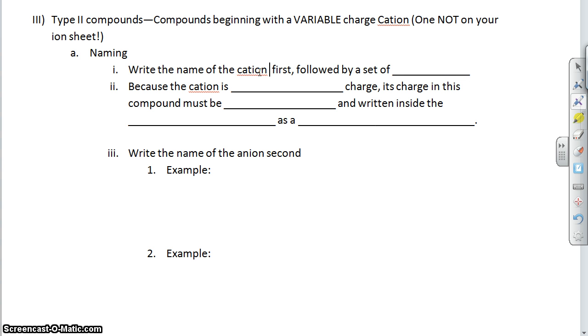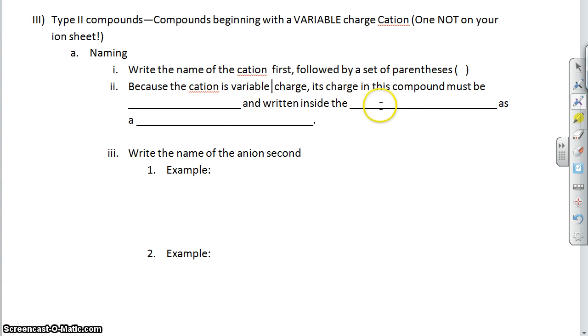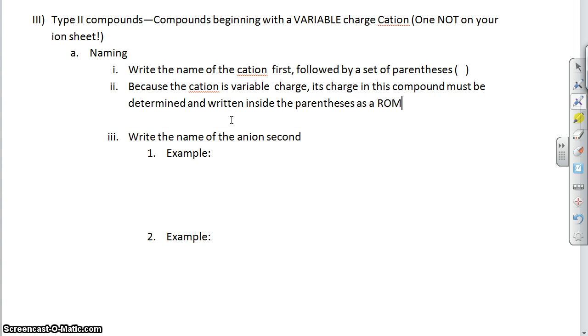We're still going to start with the name of the cation first, but we're going to follow that with a set of parentheses. We're going to kind of leave it open and we're going to come back to that. Because the cation is a variable charge, its charge within this compound must be determined and written inside of the parentheses as a Roman numeral. For those of you who don't remember how Roman numerals go, they go like this: I, II, III, IV, V, VI, VII.